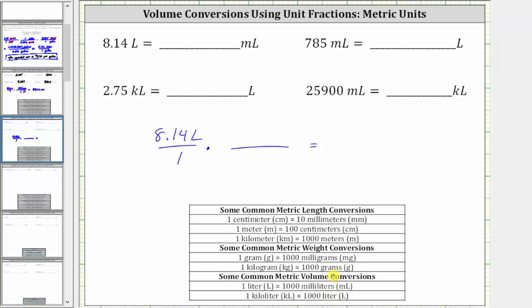Because we want liters to simplify out, and we have liters in the numerator here, we need to have liters in the denominator of the unit fraction. And therefore we have liters in the denominator and milliliters in the numerator. Because the conversion is one liter equals 1,000 milliliters, the unit fraction is 1,000 milliliters over one liter.